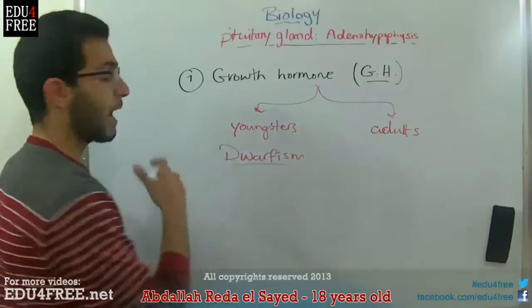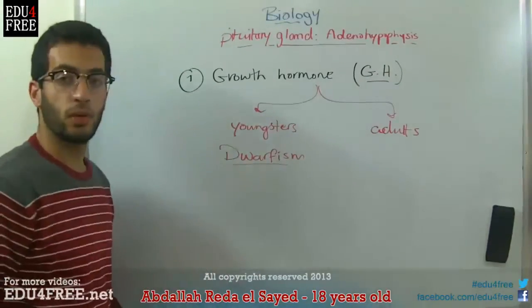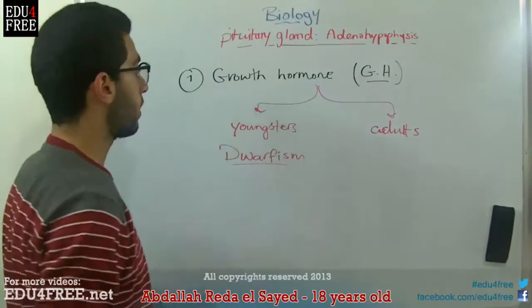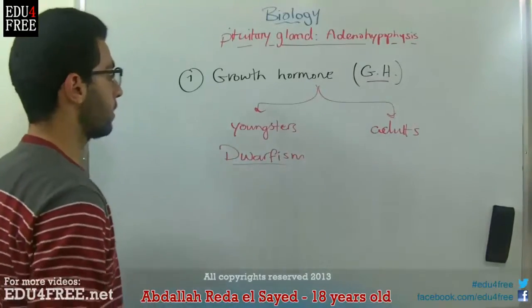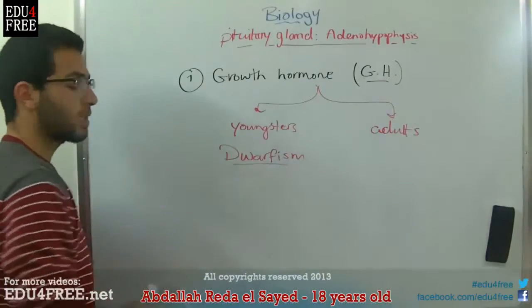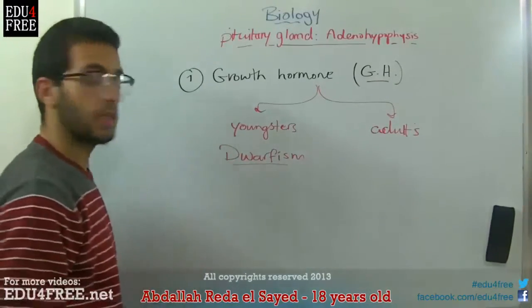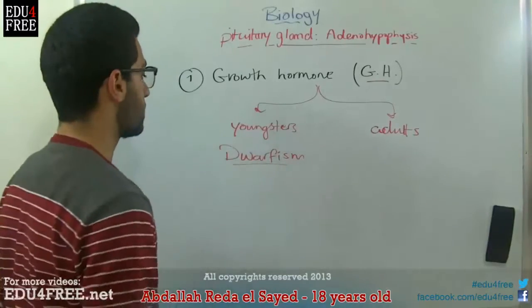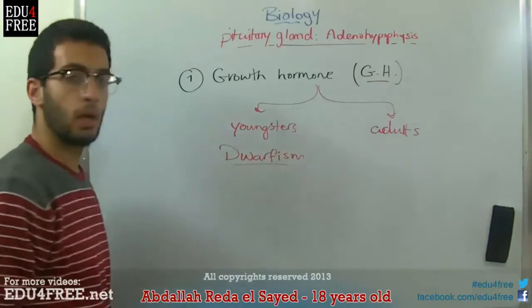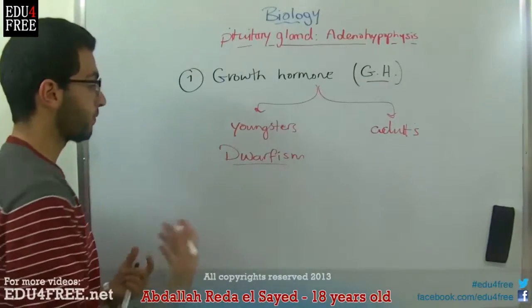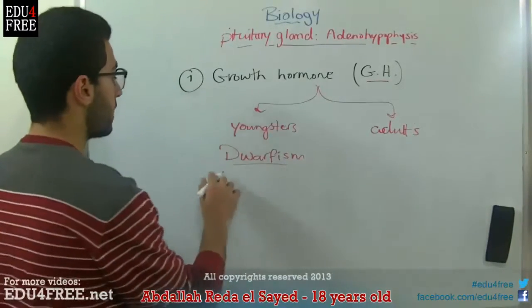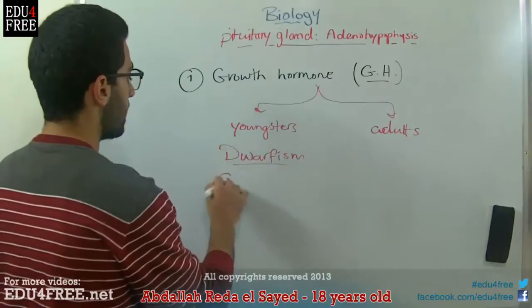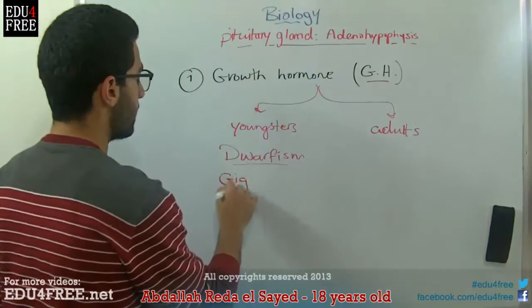If there is a hypersecretion of the growth hormone in youngsters or in childhood, this leads to the total opposite, which is a condition called gigantism.